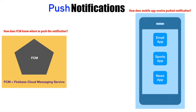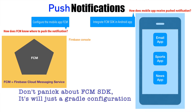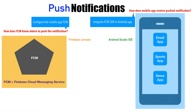When it comes to FCM, you have to configure the mobile app in FCM, and typically this is done in a Firebase console. When it comes to making sure that the mobile app receives the pushed notification, you have to basically integrate the FCM SDK in your Android app, and this is done in Android Studio — the IDE in which you are developing your mobile application.